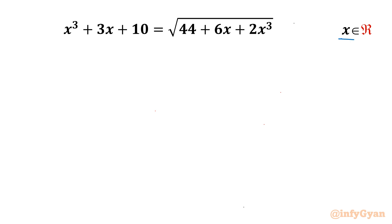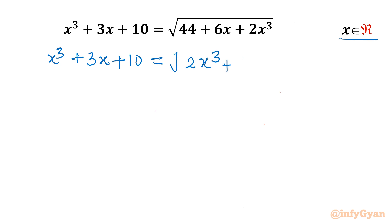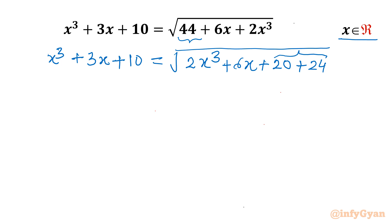Let us get started by writing our RHS. Let me write it in this manner: √(2x³ + 6x + 44). I will write 44 as 20 + 24. Now I will consider the first three terms — taking 2 common: 2(x³ + 3x + 10), and then after it is 24.